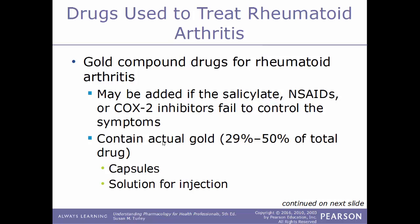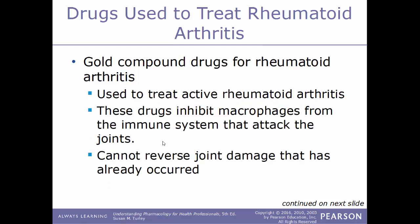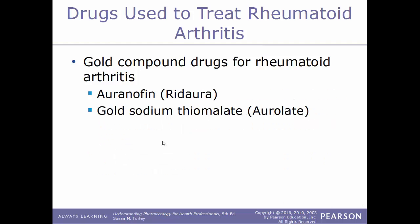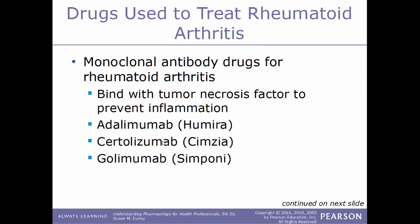Another type of drug used to treat rheumatoid arthritis are gold compound drugs. These may be added if salicylates, NSAIDs, or COX-2 inhibitors fail to control symptoms. These compounds actually contain gold — anywhere from 29% to 50% of the total drug — and can be given through capsules or in a solution for injection. They work by inhibiting macrophages from the immune system that attack the joints, but cannot reverse joint damage that has already occurred. Examples include auranofin (Ridaura) and gold sodium thiomalate (Aurolate).